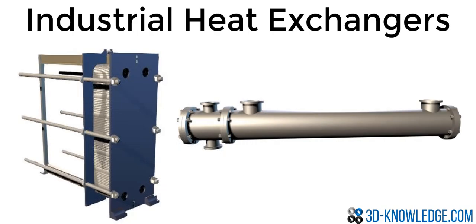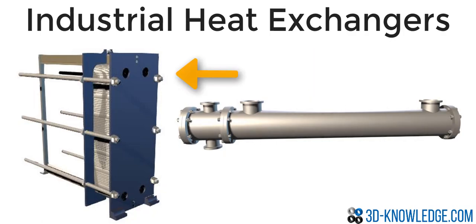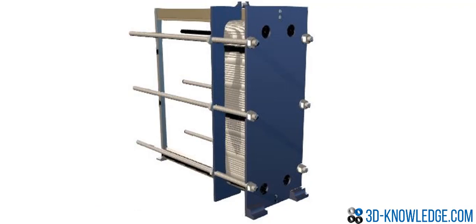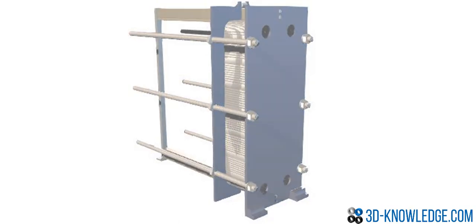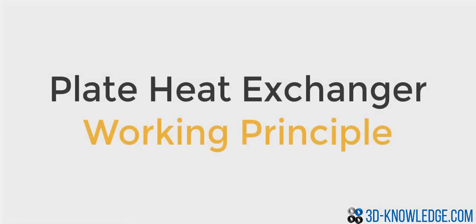In the industrial world there are only two types of heat exchanger: a shell and tube type, and a plate type. This is an image of a plate type heat exchanger, and we're going to look at the model on the website, go through all the parts, and explain some of the features.